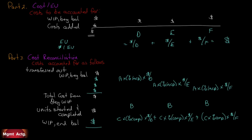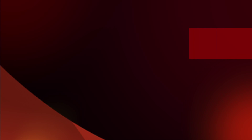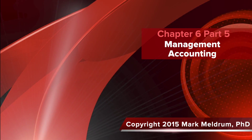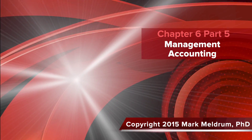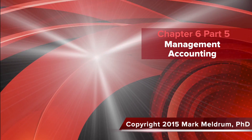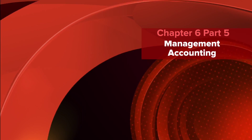Summing those three numbers, the ending WIP value should equal the total costs to be accounted for from above. It's difficult to conceptualize abstractly, so stick with the next videos where we'll do some practice problems.